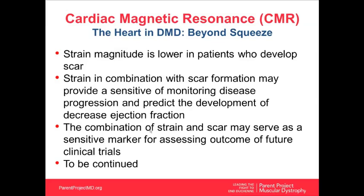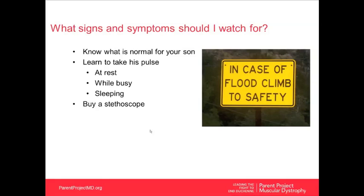Now that we've talked about cardiac imaging, what types of things should you watch for at home? Know what is normal for your son. You might learn to take his pulse at rest, during daily activities, after a transfer, while putting effort forth, and while sleeping. Consider buying a stethoscope — available for $10–$15 at the local drugstore — as it can be easier to count heart rate from a stethoscope than from a wrist pulse. Most importantly, develop a relationship with your care team before you need them in a crisis.